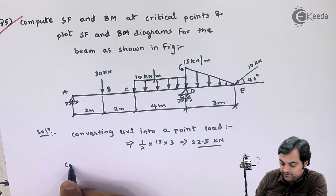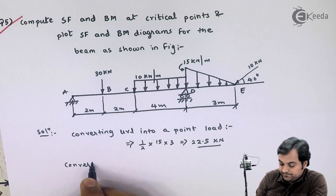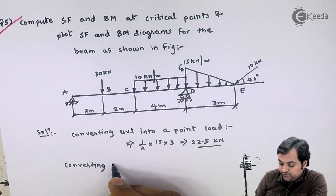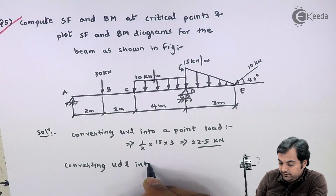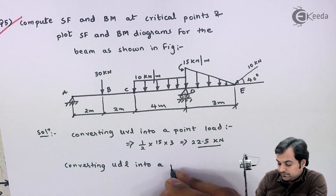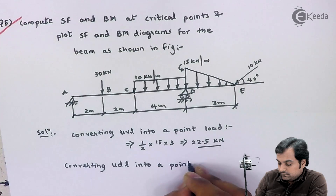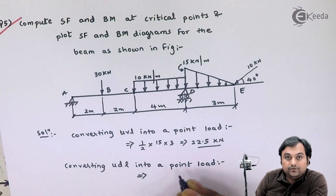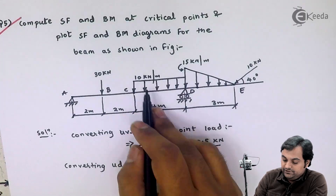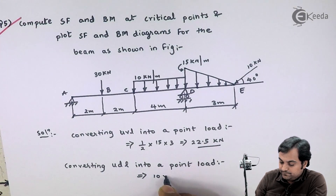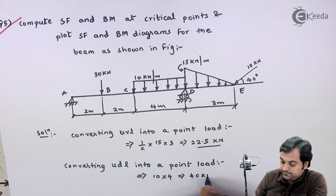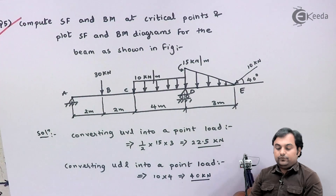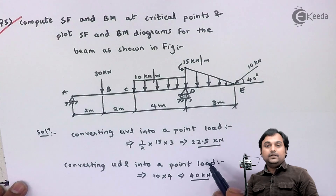Similarly, I will write down converting UDL — uniformly distributed load — into a point load. That will be equal to 10 into 4, which is 40 kilonewton.